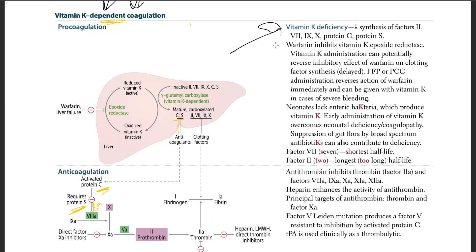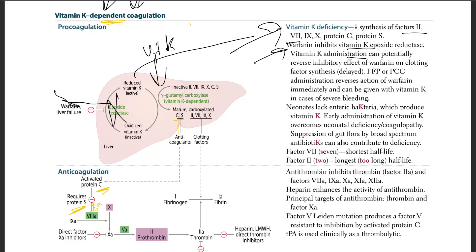In vitamin K deficiency, there is a decrease in factors 2, 7, 9, 10, and protein C/S. Warfarin inhibits vitamin K epoxide reductase. Vitamin K administration can potentially reverse this inhibition and the inhibitory effect of warfarin on clotting factors, but it is delayed because it has to get to the liver and activate these things. It needs time — it is not quick.